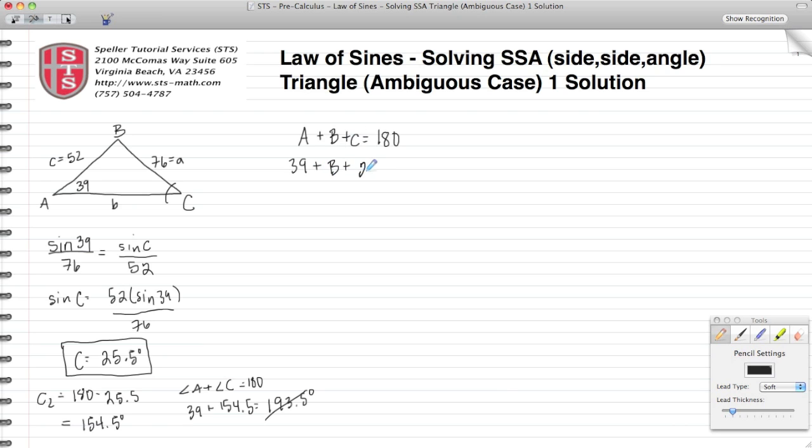angle C we just said was 25.5—all that should equal 180. We add our two numbers together, we end up with 64.5 plus B equals 180. Through algebra, by subtracting 64.5 from both sides,